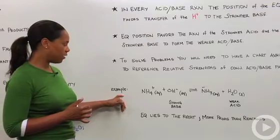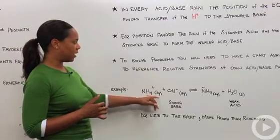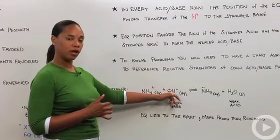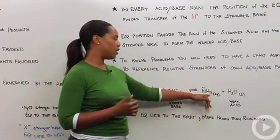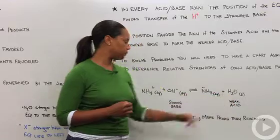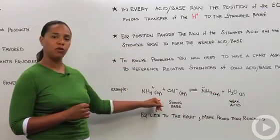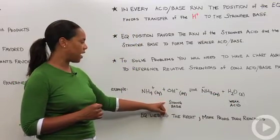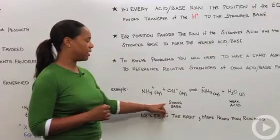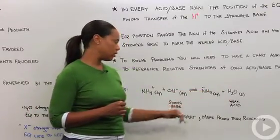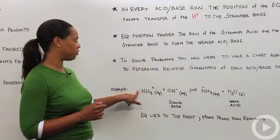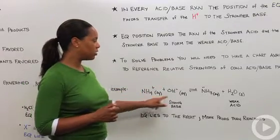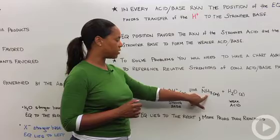Here's a very simple example where we have ammonium ion and hydroxide, which we know hydroxide is a strong base, forming in equilibrium with ammonia and water. In this case, if you have a chart handy, you'll find out that hydroxide is a stronger base than is water. So that means the tendency here is going to be for this hydroxide to abstract a proton from the ammonium ion to go forward and make the products NH3 and water.